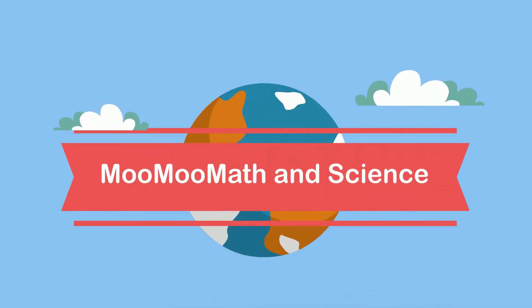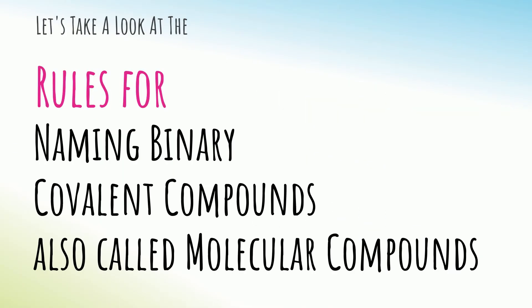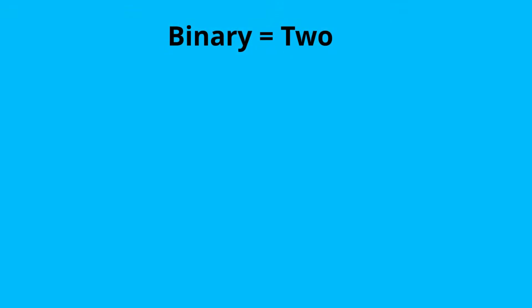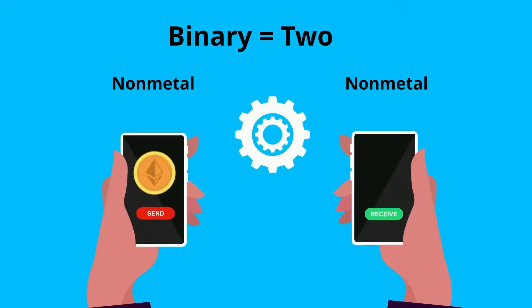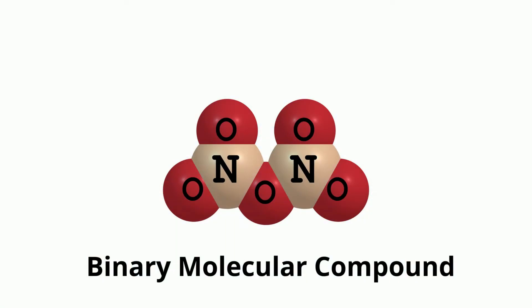Welcome to MooMooMath and Science. In this video, let's go over naming binary covalent compounds, which form when two nonmetals form a covalent bond. This type of compound is also called a binary molecular compound.